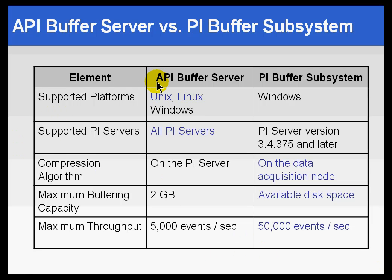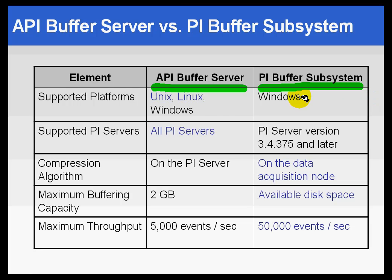There are technically two buffering mechanisms available. The one we've used for a long time is the API Buffer Server, and then there's a new one called the PI Buffer Subsystem. It's actually a basic subsystem of the PI Server, implemented in the PR1 version of PI — the high availability version. To explain how both work in an environment where you're trying to maintain a highly available PI Server, we really need to study what high availability means.